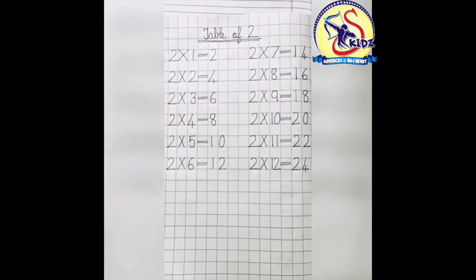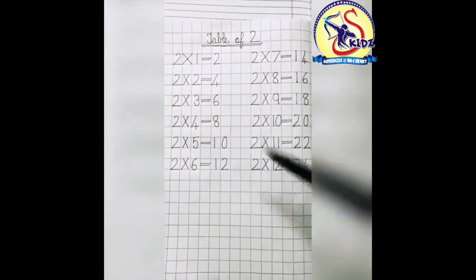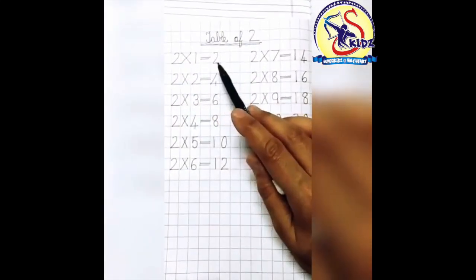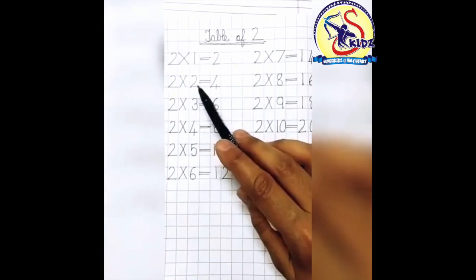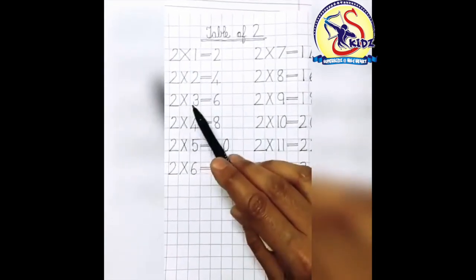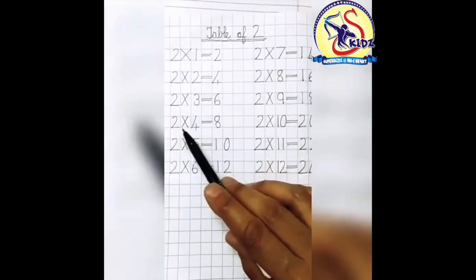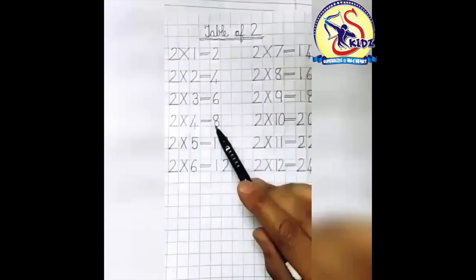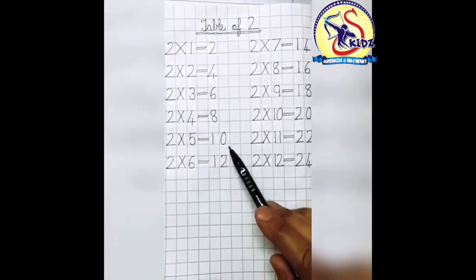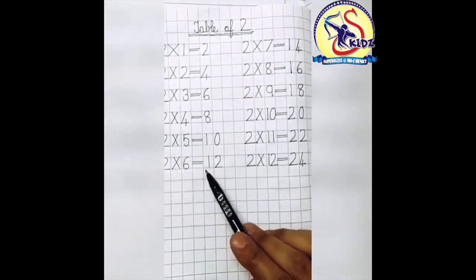We will learn the pattern how to write table of 2 in the copy. 2 into 1 equals 2. 2 into 2 equals 4. 2 into 3 equals 6. 2 into 4 equals 8. 2 into 5 equals 10. 2 into 6 equals 12.